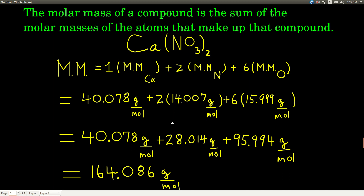If we have a compound, the molar mass is just the sum of the molar masses of the atoms that make it up. For example, calcium nitrate: in one formula unit of calcium nitrate, we have one atom of calcium, two atoms of nitrogen, and six atoms of oxygen (two times three). The molar mass of calcium nitrate is one times the molar mass of calcium, plus two times the molar mass of nitrogen, plus six times the molar mass of oxygen. From the periodic table: calcium is 40.078 g/mol, nitrogen is 14.007 g/mol, and oxygen is 15.999 g/mol.